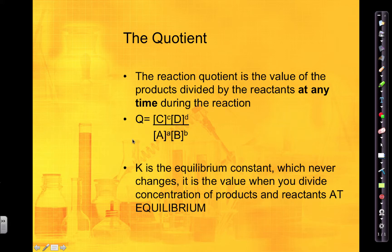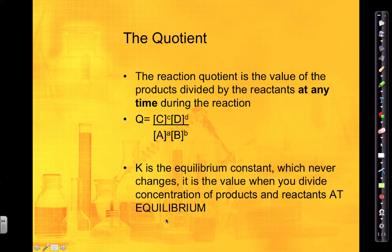Q can change and depends on how much you have of each of your reactants and products. K is the equilibrium constant, which means it stays the same — its value is when you divide the concentration of the products and the reactants at equilibrium. Q is used to figure out if the reaction is going to keep going: is it at equilibrium or not, and which direction can it go? Will it go towards the product side to make more products, or towards the reactant side to make more reactants?